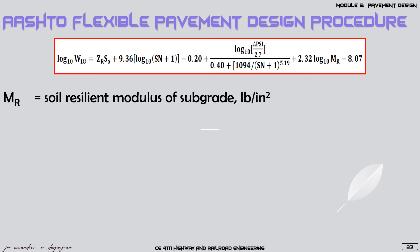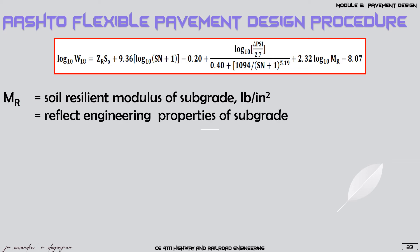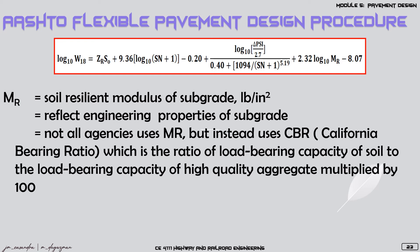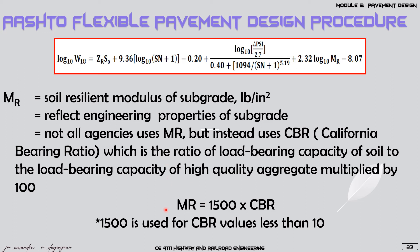Lastly, we have MR, the soil resilient modulus of the subgrade, which reflects the engineering property of the subgrade or the layer just above the sub-base. For some agencies that do not use the resilient modulus, they use the CBR or California Bearing Ratio, defined as the ratio of the load-bearing capacity of the soil to the load-bearing capacity of high-quality aggregate, multiplied by 100. If the CBR is less than 10, then we use the equation MR = 1,500 × CBR. CBR will be discussed further in the next module.